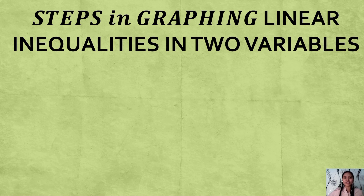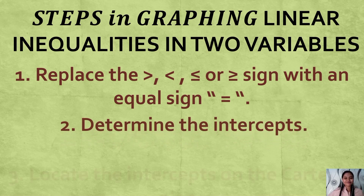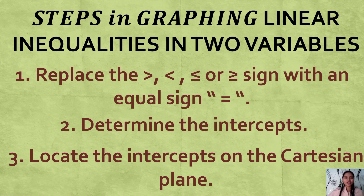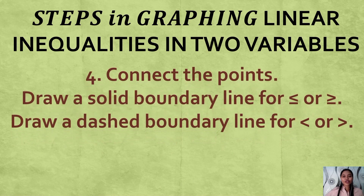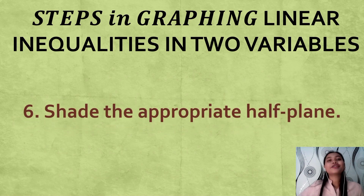Here are the steps in graphing linear inequalities in two variables. First, replace the inequality symbol with an equal sign. Second, determine the intercepts. Third, locate the intercepts on the Cartesian plane. Fourth, connect the points — draw a solid boundary line for ≤ or ≥, and a dashed boundary line for < or >. Fifth, test a point in one half-plane to see which satisfies the inequality. Last, shade the appropriate half-plane.